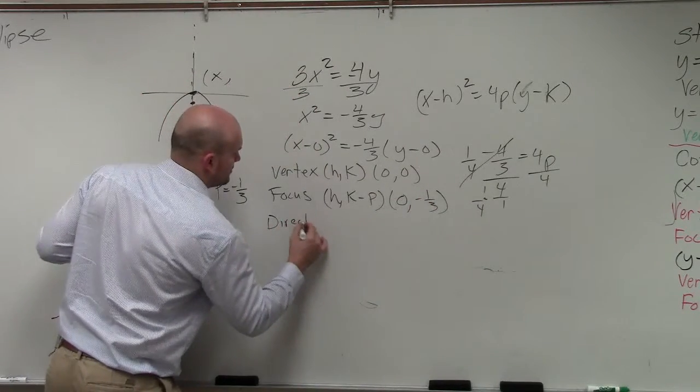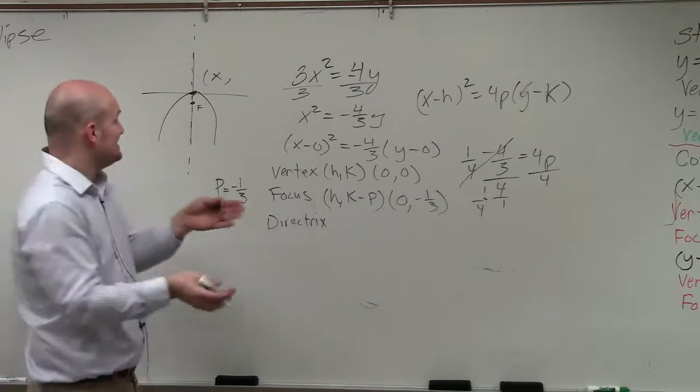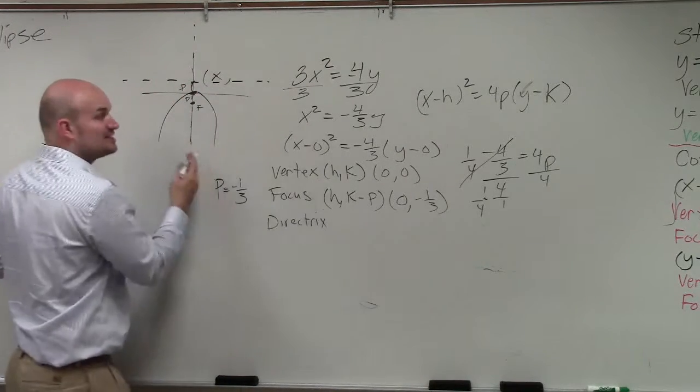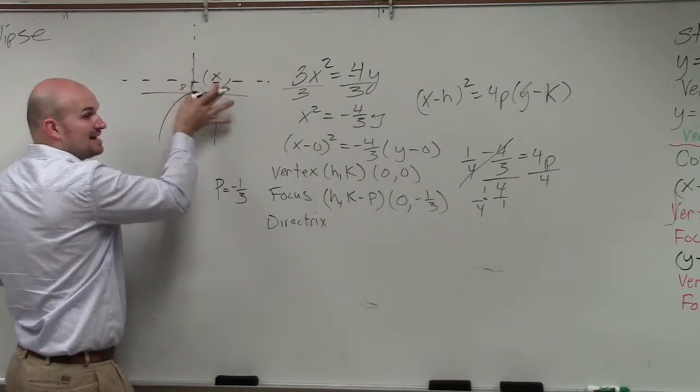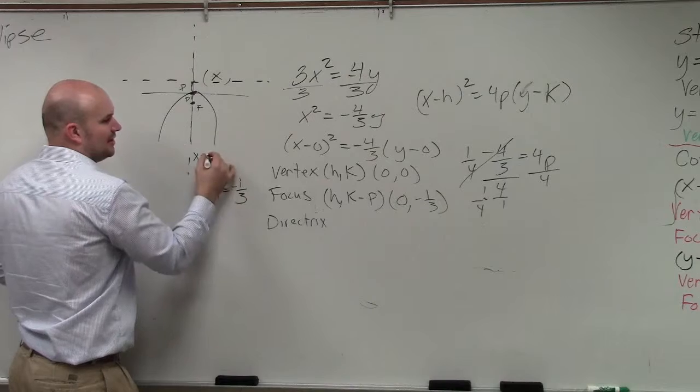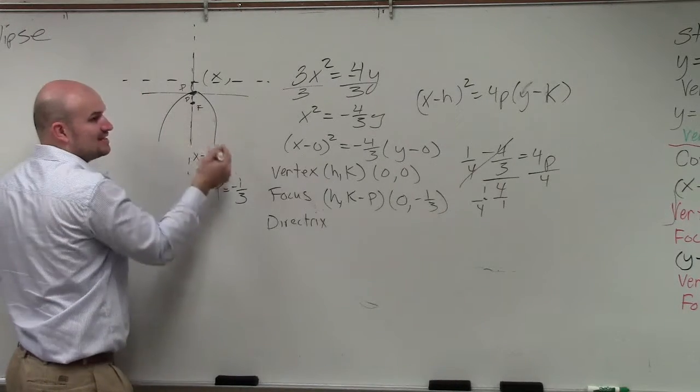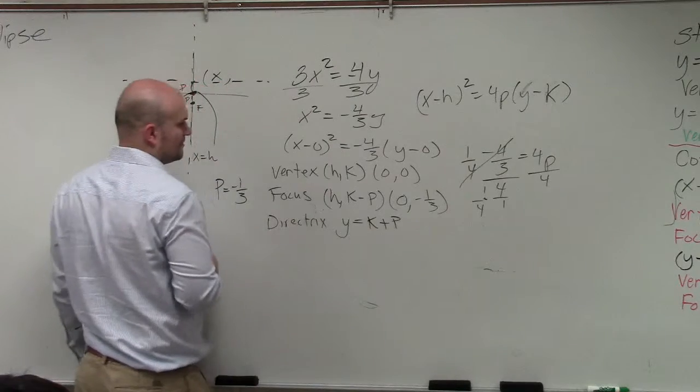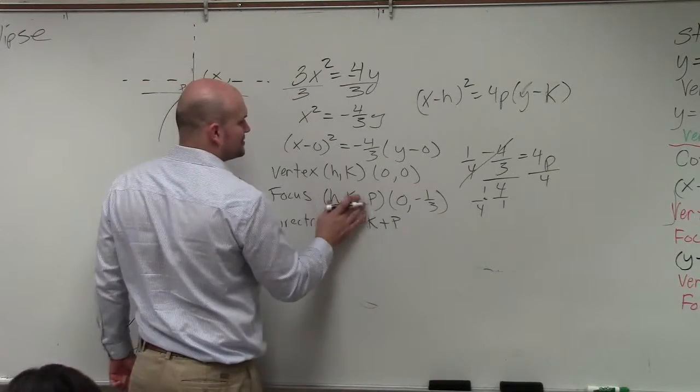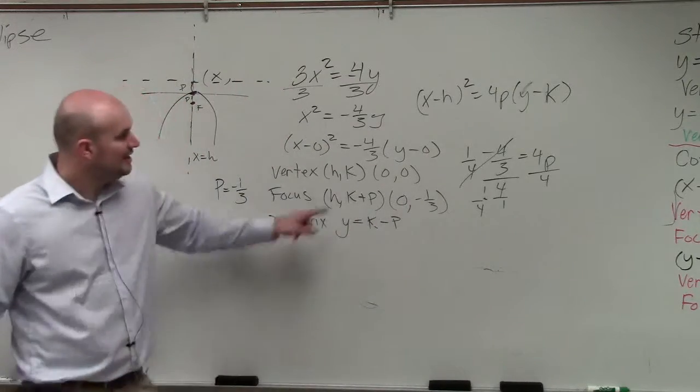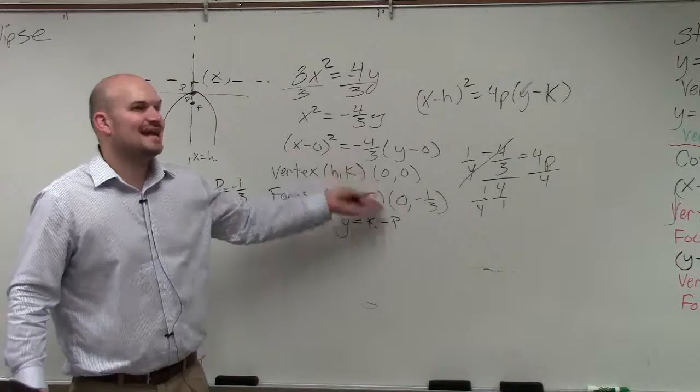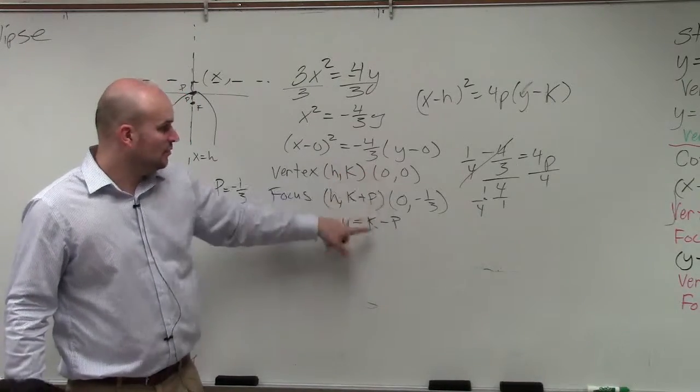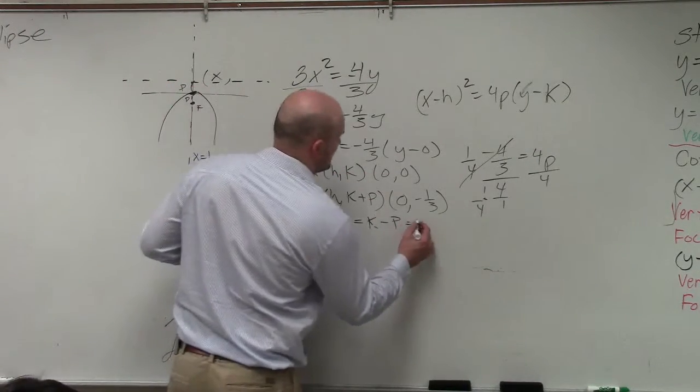Whereas the directrix, remember, is the same absolute distance. So this distance, which we call p, is the same distance that I have for my directrix. But remember, the directrix is perpendicular to my axis of symmetry. So the axis of symmetry is x equals h, right? So my directrix then is going to be y equals k plus p. Actually, I'm sorry. The true formula is k plus p. But what's 0 plus negative 1 third? Negative 1 third, right? What's 0 minus a negative 1 third? Positive 1 third.